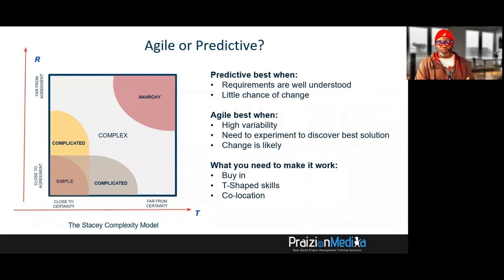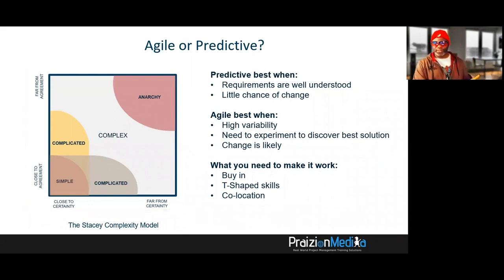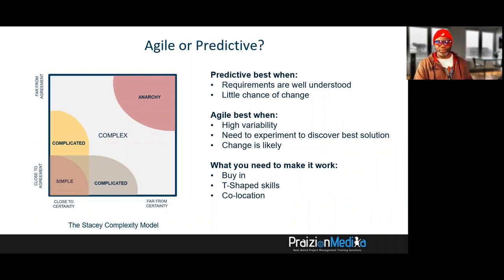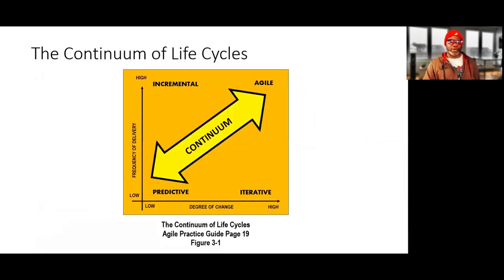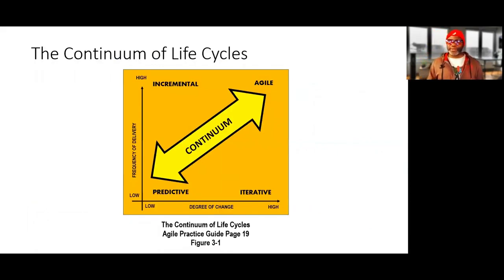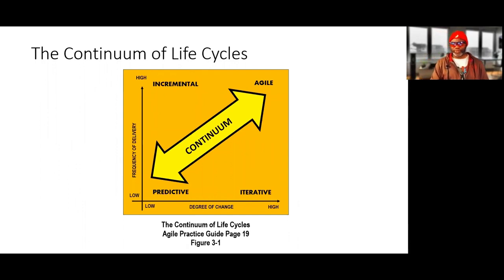Agile works best when there's high variability, need to experiment to discover, and change is likely. Predictive works best when requirements are well understood. The continuum of life cycles shows when to use predictive — low degree of change, low frequency of delivery — and when to use Agile — high degree of change, high frequency of delivery.